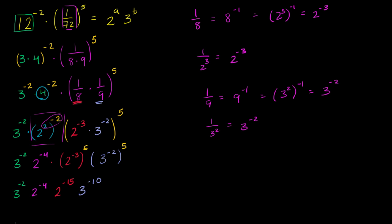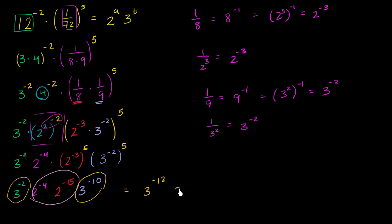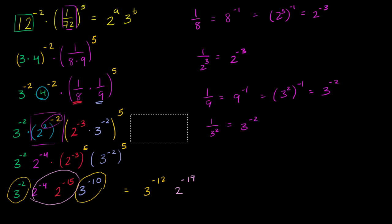Now combining: multiplying 3 to the negative 2 times 3 to the negative 10 — same base, add the exponents — gives 3 to the negative 12. And 2 to the negative 4 times 2 to the negative 15 gives 2 to the negative 19. We want this to equal 2 to the a times 3 to the b.